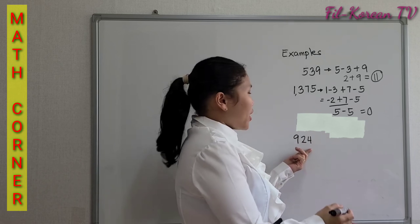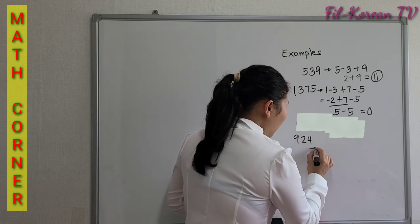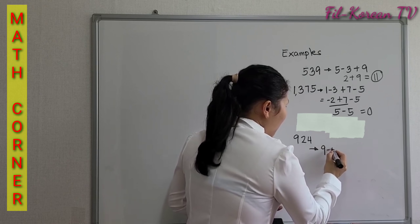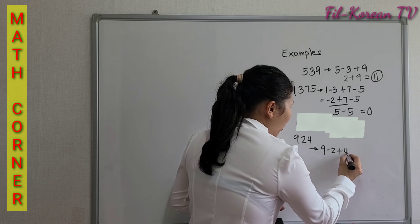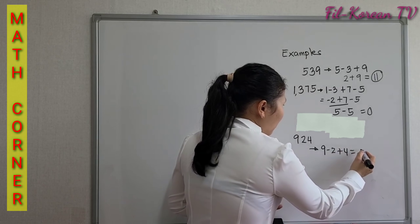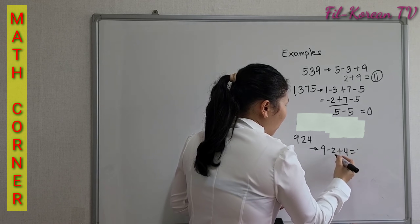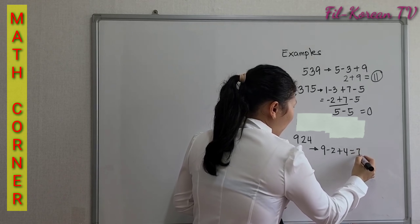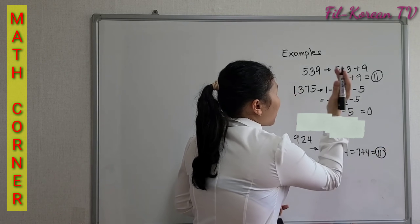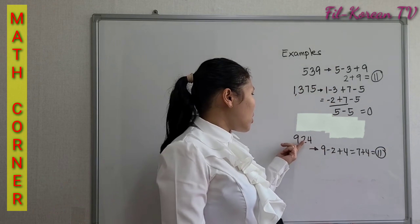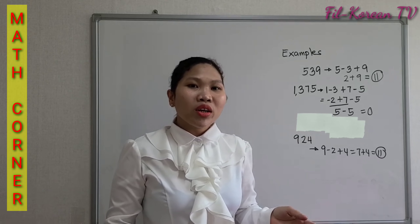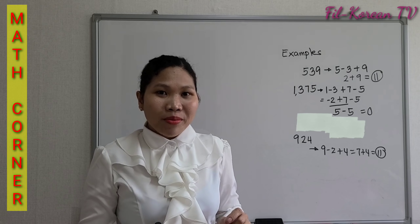Another example: 924. We will apply the rule: 9 minus 2 plus 4. 9 minus 2 equals 7, then 7 plus 4 equals 11. Since the result is 11, 924 can be divided by 11 without a remainder.